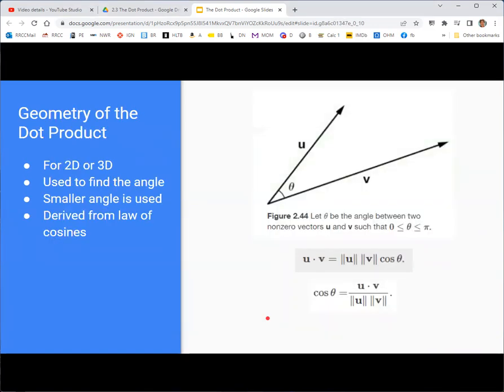Now, the vector dot product relates to the angle between two vectors according to this formula. The dot product of u and v, or u dot v, is the magnitude of u times the magnitude of v times the cosine of the angle between them.